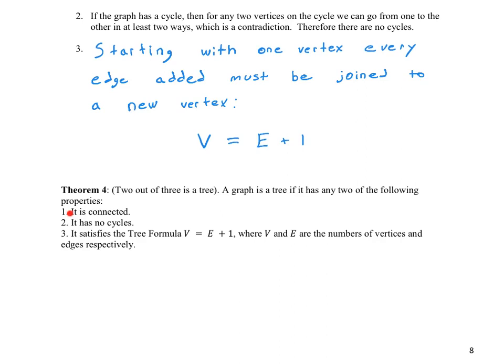So if properties 1 and 2 are true, if it's connected and it has no cycles, then the tree formula is true and you have a tree. If it has no cycles and the tree formula is true, then it's connected and you have a tree. Or the final combination, if it would be connected and you found out that the tree formula is true, you know that that graph has no cycles and it is a tree.